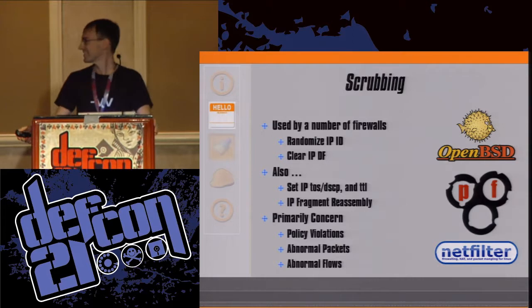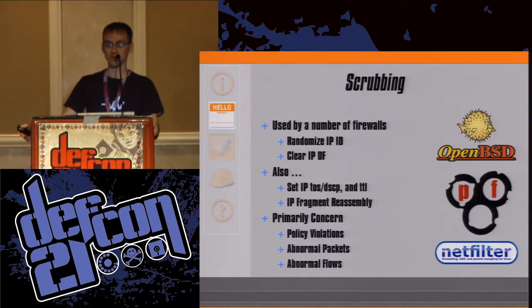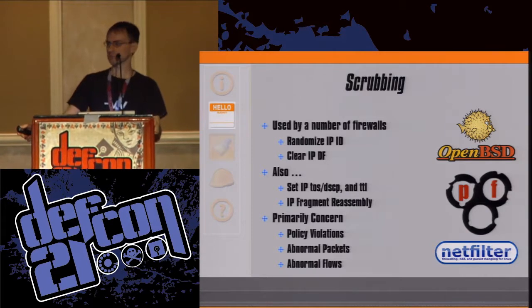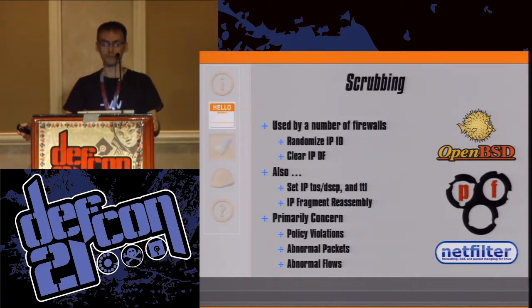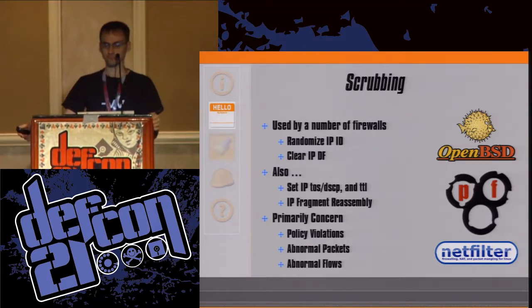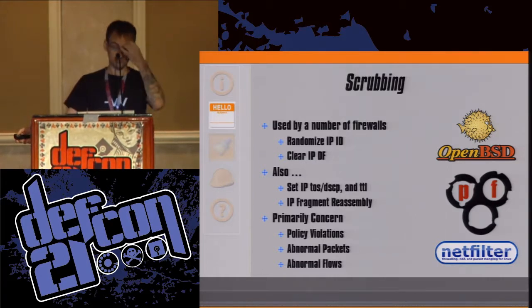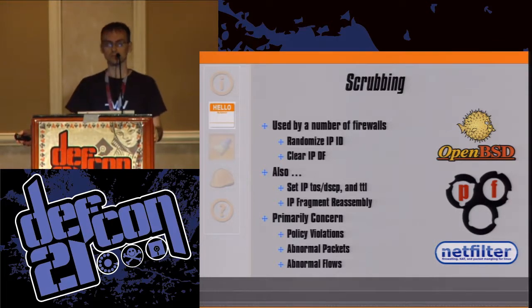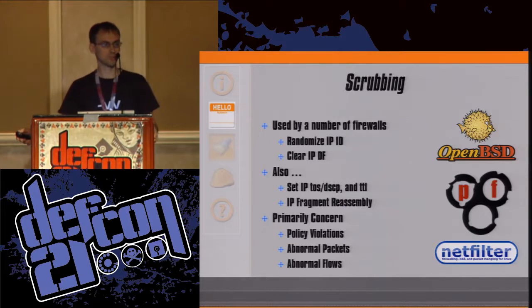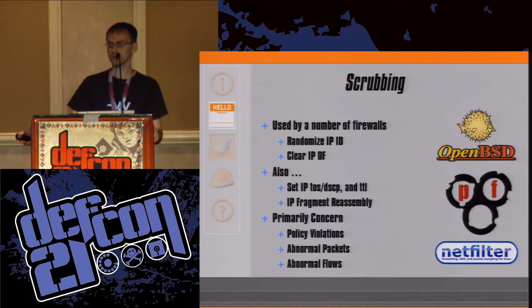Netfilter allows you to set the IP type of service and the time to live. All three solutions will do IP fragment reassembly. The primary concern for all these firewalls is policy violations, abnormal packets, and abnormal flows. There is some scrubbing with some normalization, but not enough — nor the right kind of normalization — not effective for fingerprinting prevention, and not really practical, lacking the ability to cover the entire network.